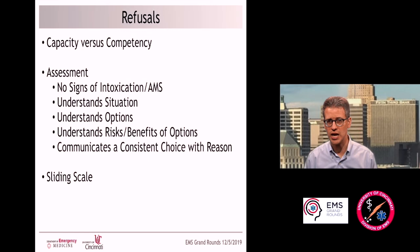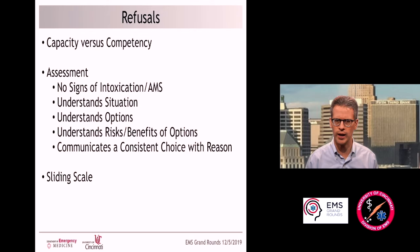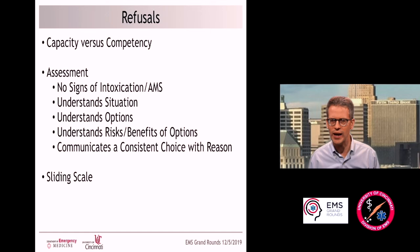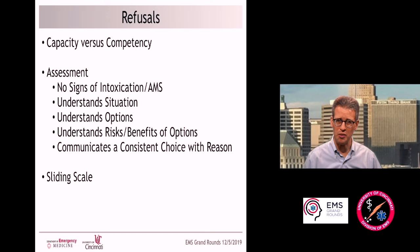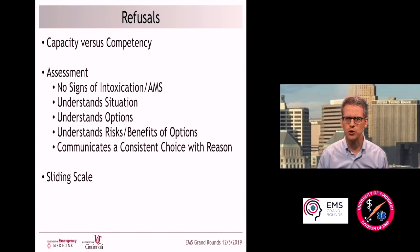They also have to demonstrate that they understand the various options available to them — for example, going to the hospital for surgery, trying conservative treatment with splints and braces, or going home and likely never walking again. They must be able to articulate all those options. Then they need to articulate the risks and benefits of each option. Finally, they should be able to communicate a consistent choice, ideally with some reason provided. Anyone you're assessing for capacity must demonstrate all of these things.